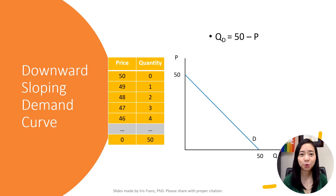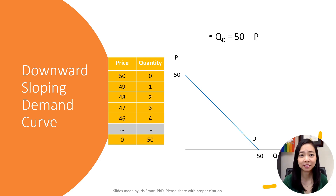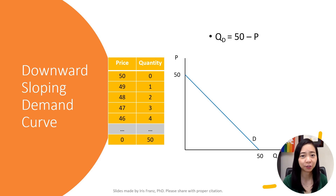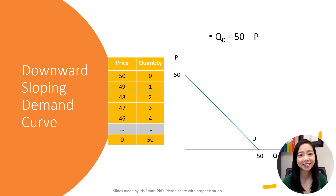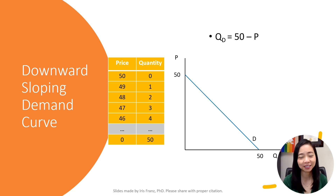Suppose I own the only pastry shop in a tiny village. My quantity demanded is given by 50 minus the price. If I sell my cake at $50, no one would buy it. If I sell the cake for $49, the quantity demanded is 1. If I sell the cake for $48 each, quantity demanded is 2, and so on.